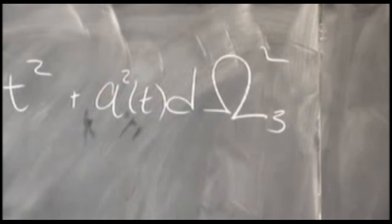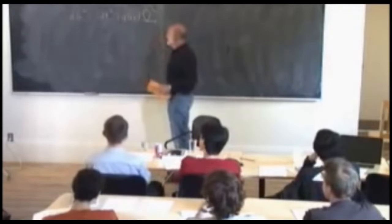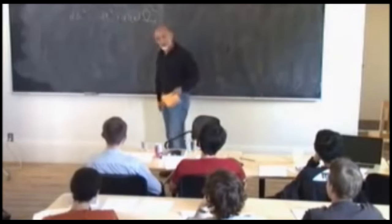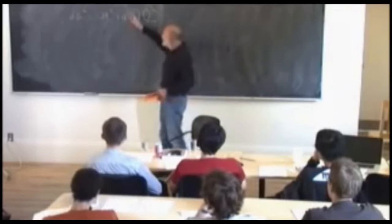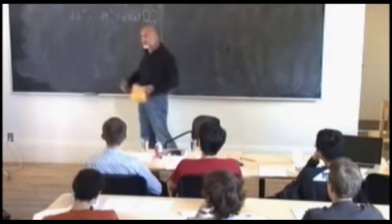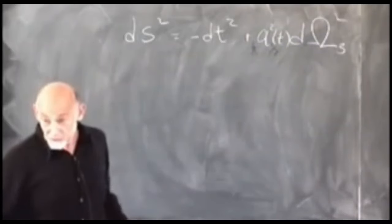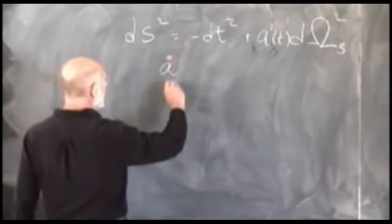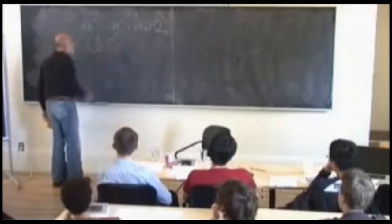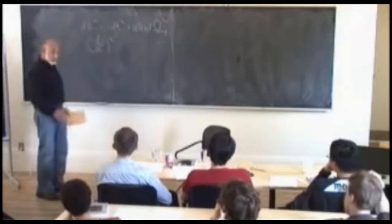This is called the FRW — Friedmann-Robertson-Walker-Lemaître — universe. The only question is how does A evolve with time. The equations of general relativity simplify when this form is plugged in as an ansatz, and you just get: (a-dot over a) squared equals rho minus 1 over a squared. The left-hand side, a-dot over a, is the rate of expansion.